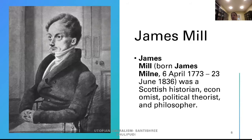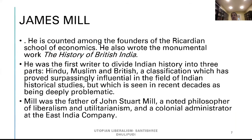James Mill is the father of John Stuart Mill, 1773 to 1836. He is a Scottish historian, economist, political theorist, and philosopher. He is counted among the founders of the Ricardian School of Economics, that is, David Ricardo.